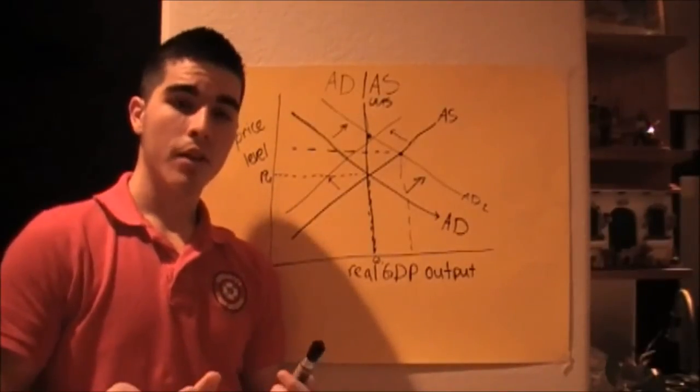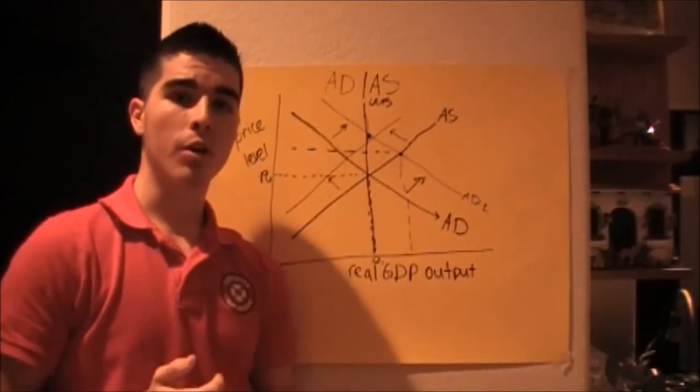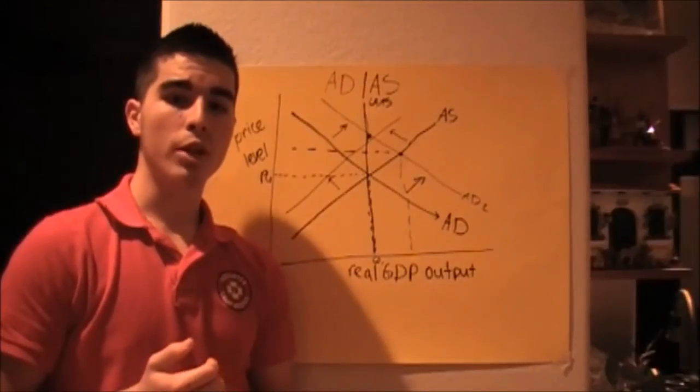Opposite of that, monetary contractionary policy would be to sell bonds, increase the discount rate, and increase the reserve ratio.